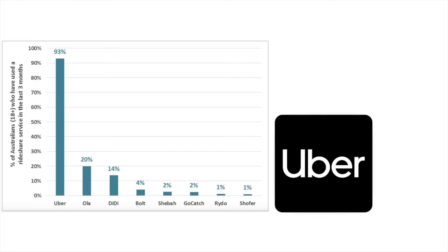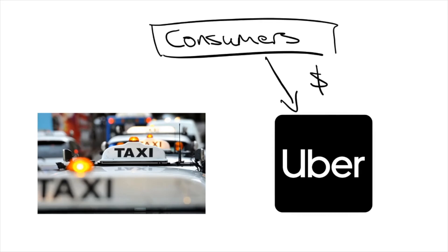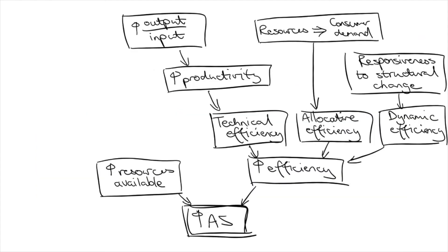One of my favorite case studies for this is Uber. The ride-sharing app was launched in 2012 but was banned until late 2015, with the ACT being the first to legalize it. Since becoming legalized, they've become the market leader in ride-sharing and taxi services, showing how much consumers favored them. But for the three years that it was banned, consumers had no choice but to put their resources in the taxi industry. This is a resistance to structural change in the economy and contributed to a lack of dynamic efficiency. This is again why microeconomic policies are used — deregulation can be used to encourage competition, putting pressure on firms and industries to be responsive to consumer demand and technological advancements, leading to dynamic efficiency.